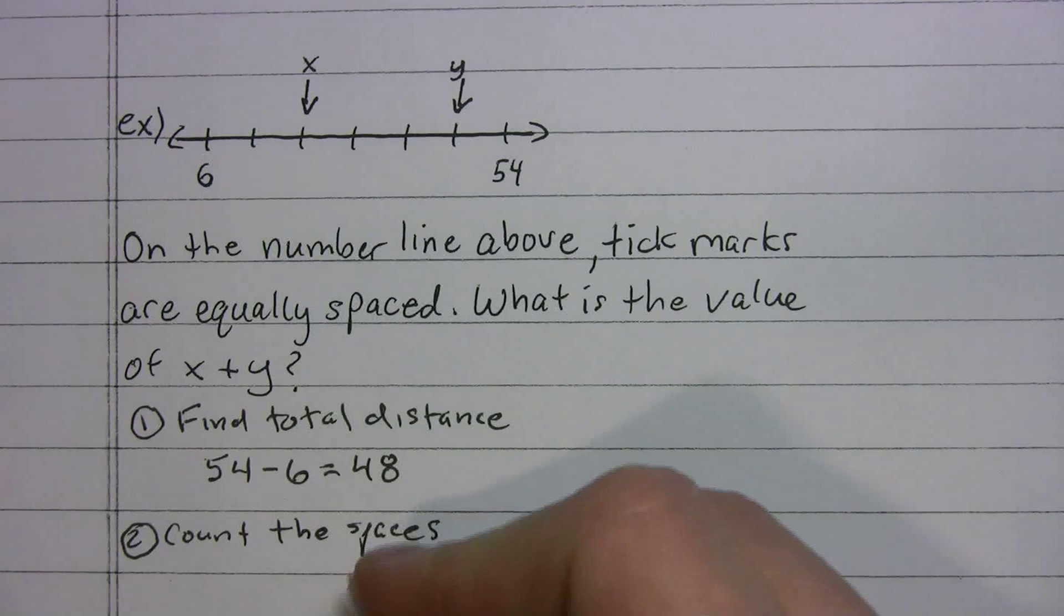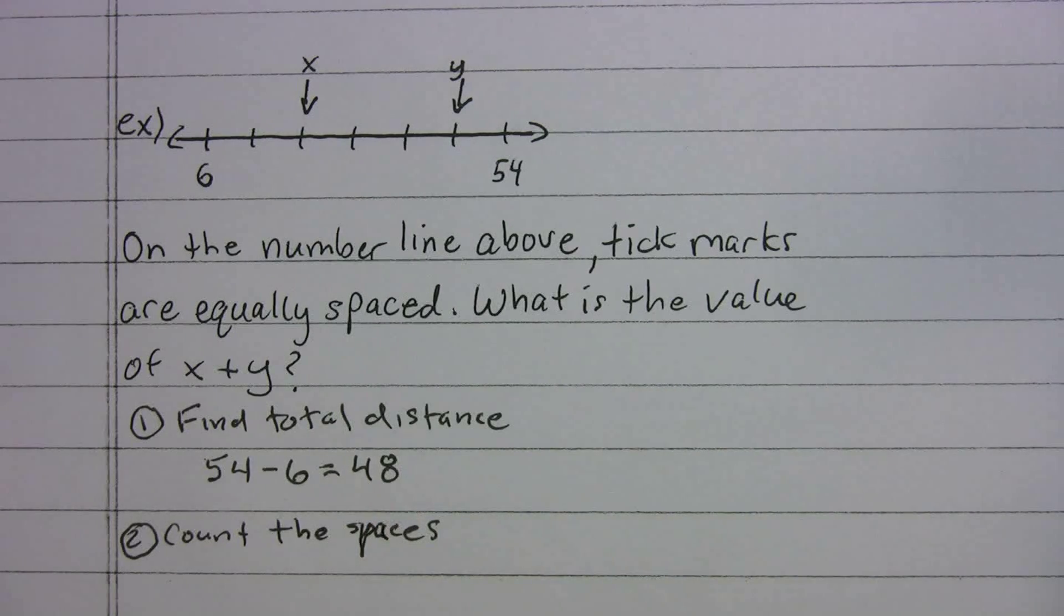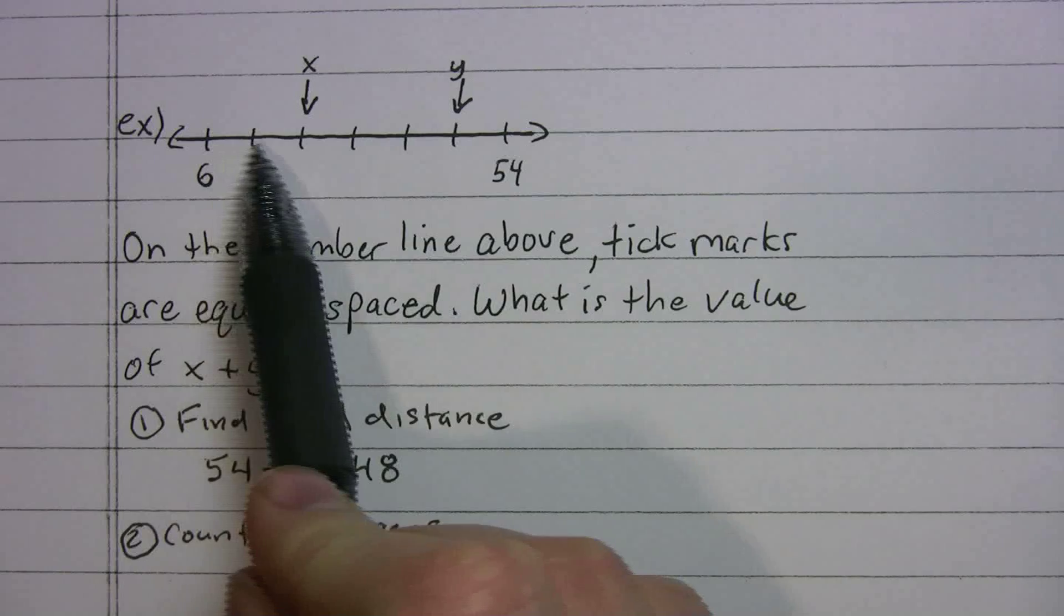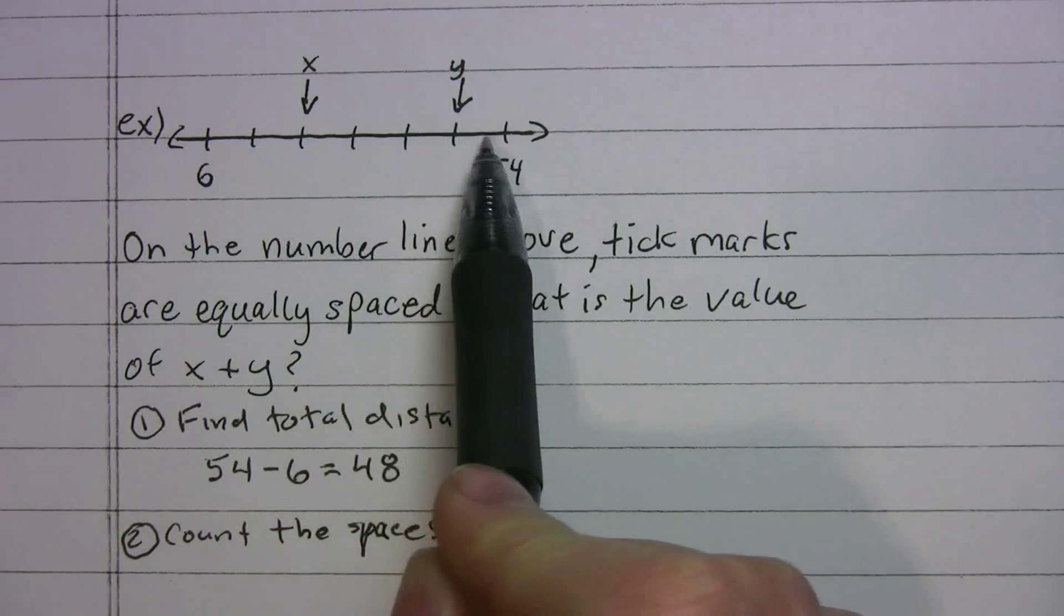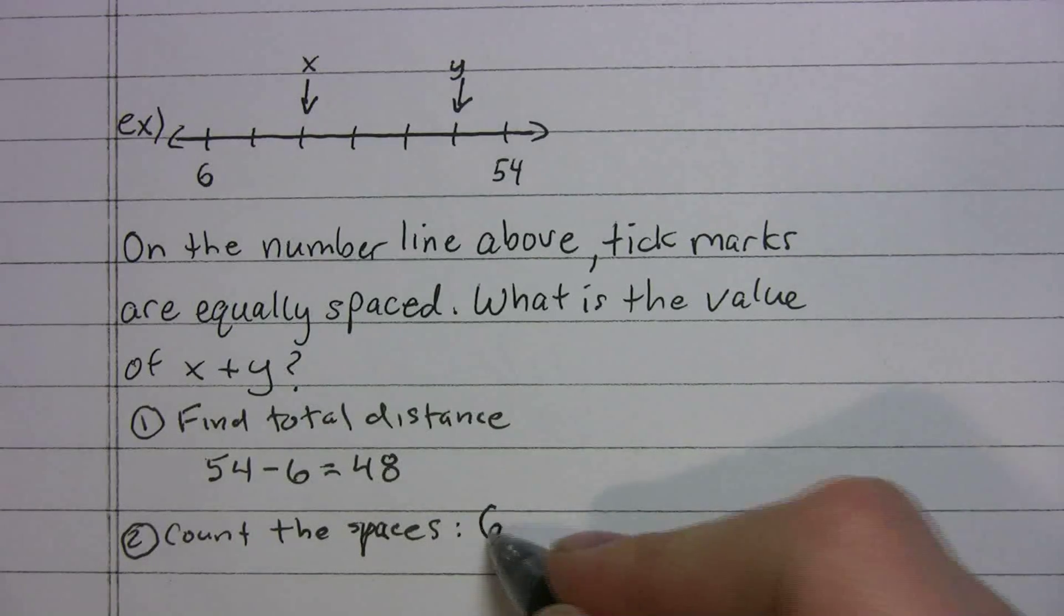All right, you're not going to count the tick marks. That just confuses things. So in this problem, you have one, two, three, four, five, six spaces. So we have six spaces.